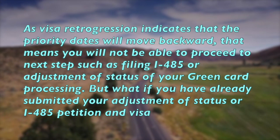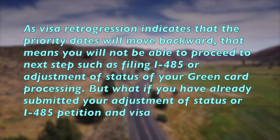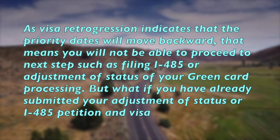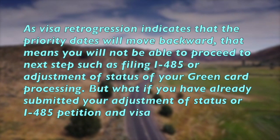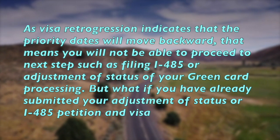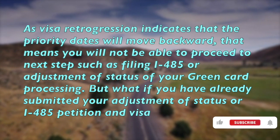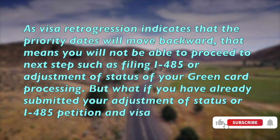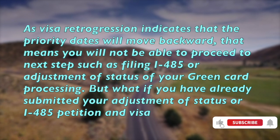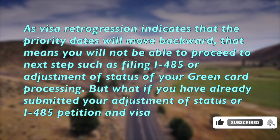Now let's understand how visa retrogression impacts your green card or immigrant visa processing. Since visa retrogression indicates that the priority dates will move backward, that means you will not be able to proceed to next steps such as filing an I-485 or adjustment of status for your green card process.